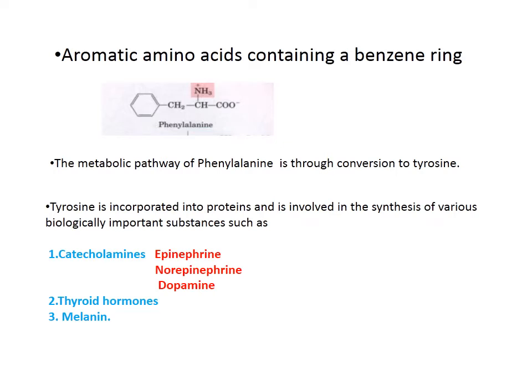Tyrosine is important because it is incorporated into proteins and is involved in the synthesis of various biologically important substances such as catecholamines, thyroid hormones, and melanin. Catecholamines include epinephrine (also called adrenaline), norepinephrine (noradrenaline), and dopamine. Tyrosine is present in the structures of epinephrine and dopamine, and through modification of tyrosine you get these three catecholamines.